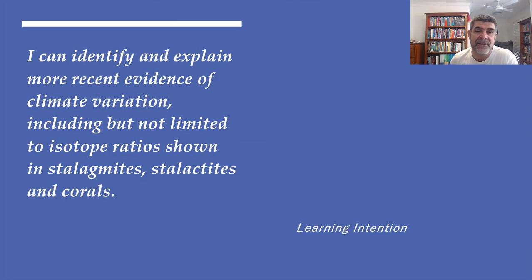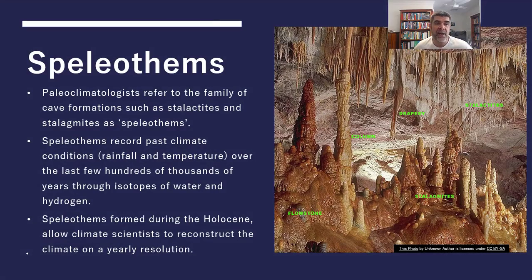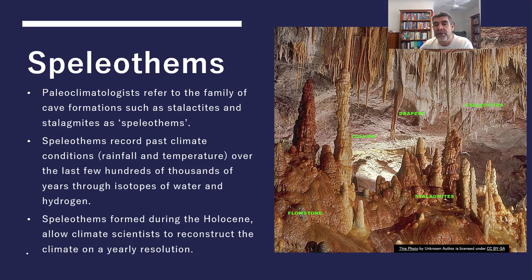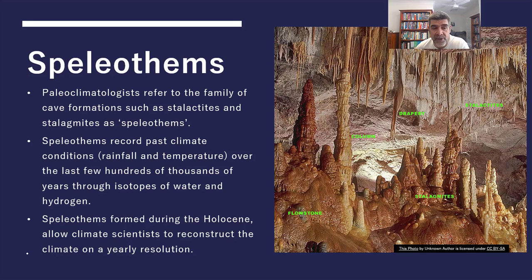We'll look at isotope ratio information from stalagmites, stalactites and corals. Paleoclimatologists refer to the whole family of cave formations — including stalactites, stalagmites, drapery, columns, and flowstones — under the general banner of speleothems.